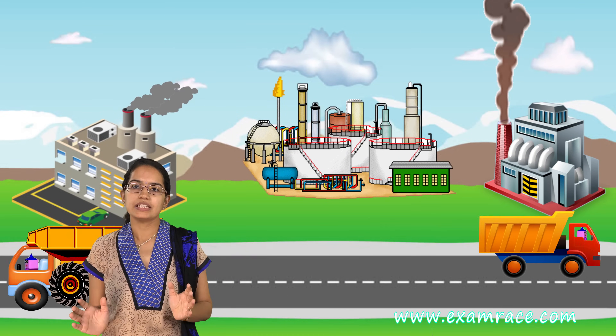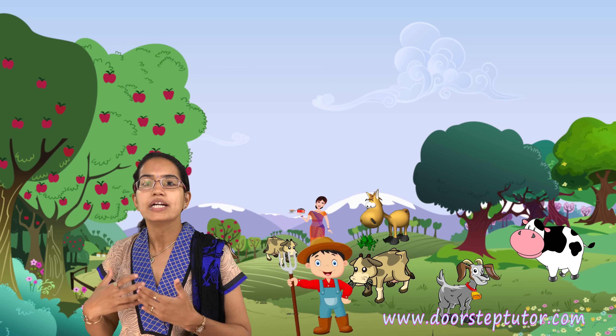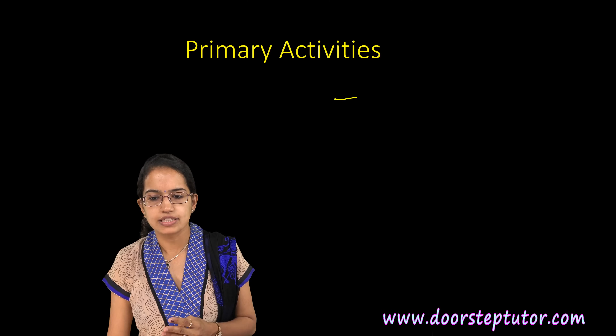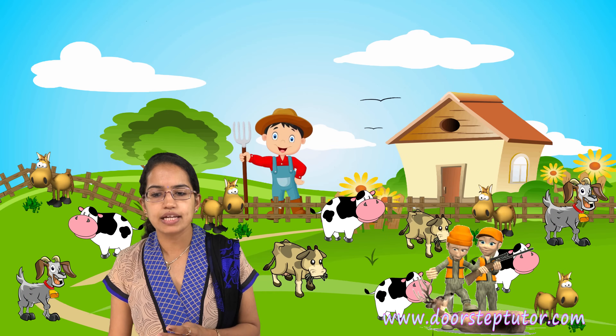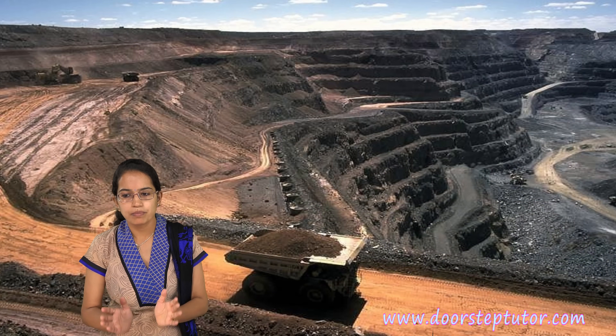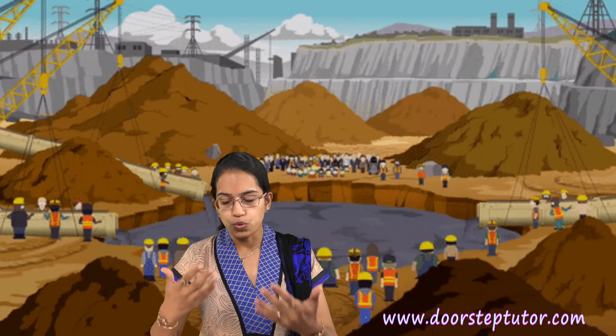This chapter forms the basis for the primary activities. As we understood in our previous lectures, primary activities are those activities where you are directly dependent on nature. Three basic activities we classify here: hunting and gathering, agriculture, and mining. Besides that, we also have forestry, fishing, and quarrying as part of the primary activities.